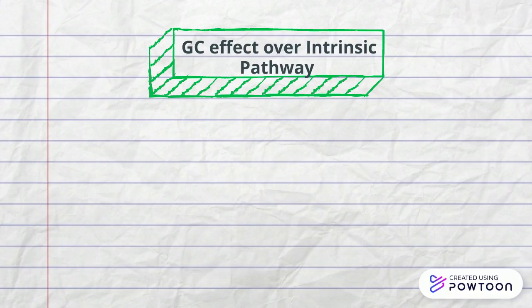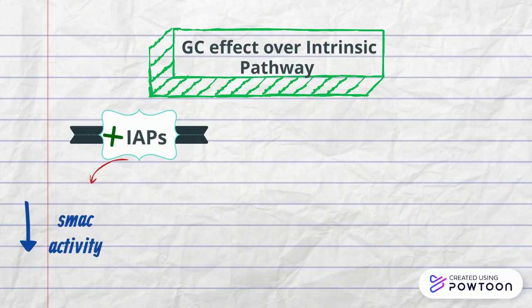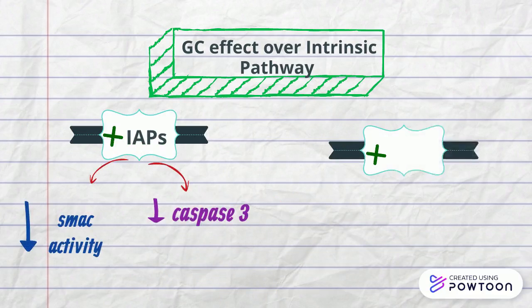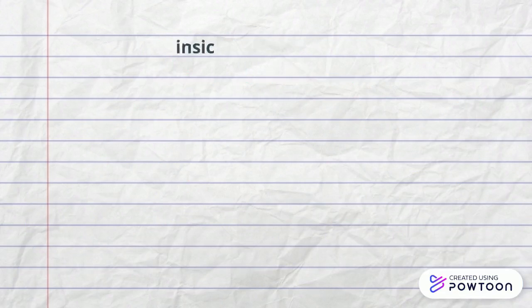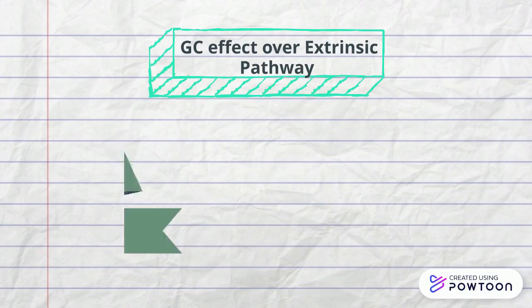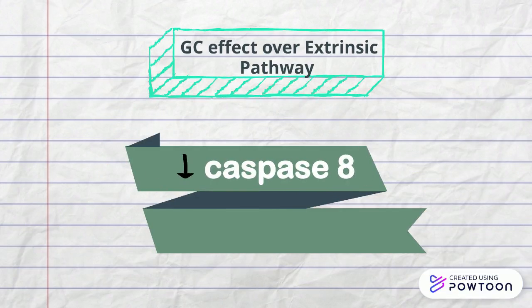Glucocorticoids also activate inhibitor of apoptosis proteins and mitogen-activated protein kinases that inhibit apoptotic factors. Regarding the extrinsic pathway, glucocorticoids inhibit caspase 8 and the mRNA of Fas proteins, which are pro-apoptotic receptors, thus decreasing apoptosis of neutrophils.